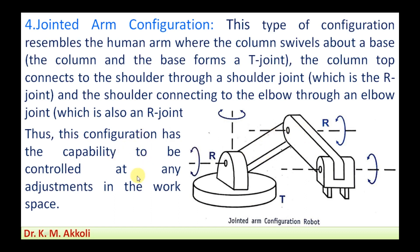This configuration has the capability to be controlled at any position in the workspace. The arm moves rotationally about its own axis, and the elbow, connected to a wrist, allows movement in any direction in the surrounding working space.